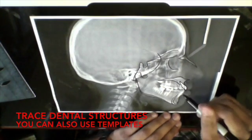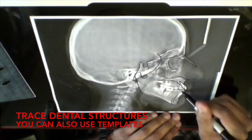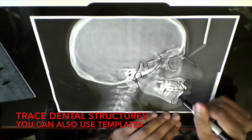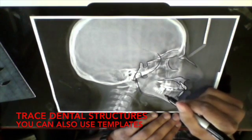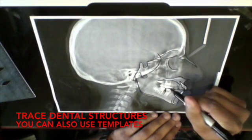Trace the upper and lower incisors as well as the upper and lower first molars. You may also use templates or stencils to get a nice drawing. Having a dental cast on hand helps in identifying molar relationship.